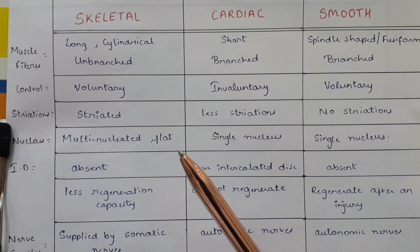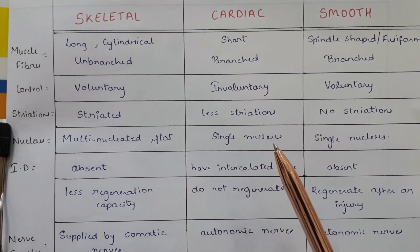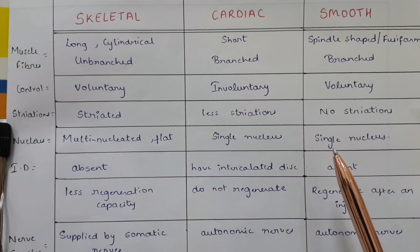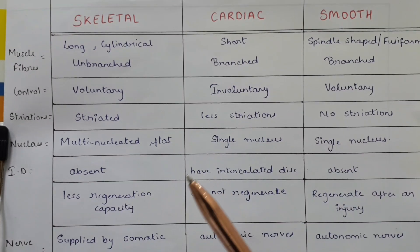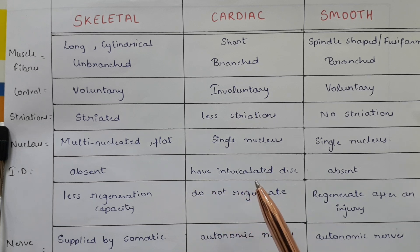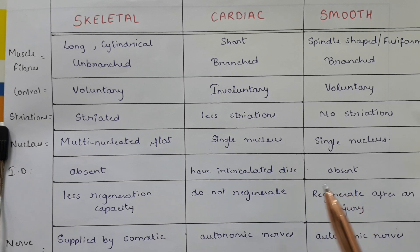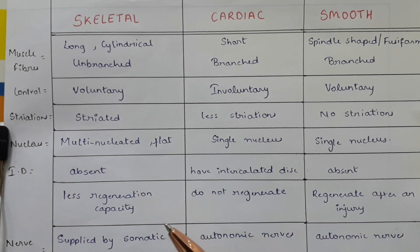Skeletal muscles have multi-nucleated, flat nuclei. Cardiac muscles have a single nucleus and smooth muscles have a single nucleus. Skeletal muscles do not have intercalated discs. Cardiac muscles have intercalated discs. Smooth muscles do not have intercalated discs.